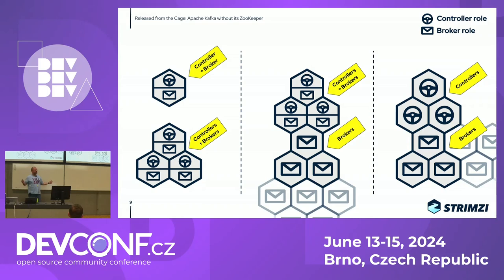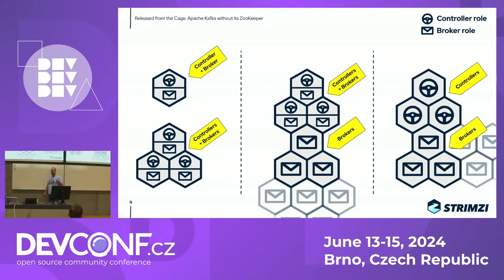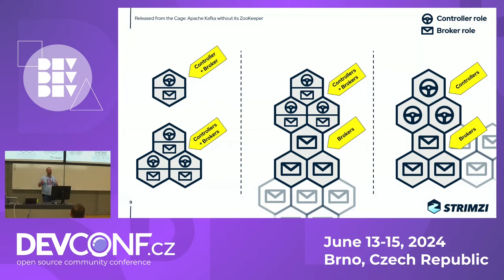As you grow the cluster, at some point you don't want to add more controller nodes because they need to maintain the quorum and having too many makes it complicated. So you add additional broker-only nodes. That gives you the middle architecture: three mixed nodes with both roles plus additional brokers. And finally, as your cluster grows further, you may want to isolate resources — using controller-only nodes and broker-only nodes, which closely resembles how a ZooKeeper-based cluster worked.